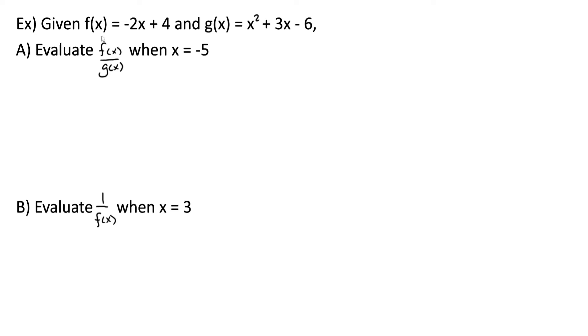Let's look at this example. Here we've been given two functions, f and g, and we're first being asked to evaluate f of x over g of x when x is equal to negative 5, which is the same thing as them asking us to find f of negative 5 over g of negative 5.